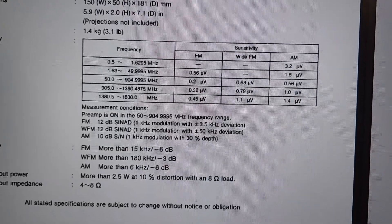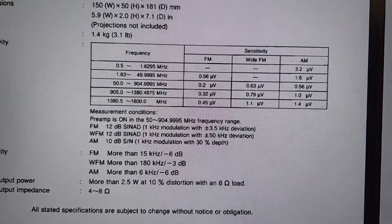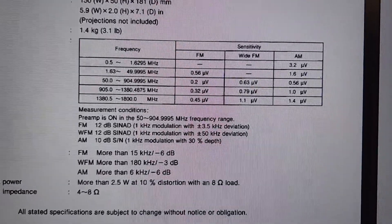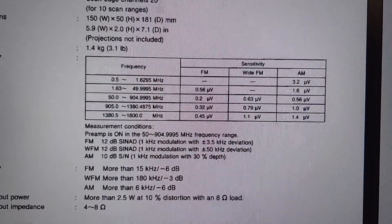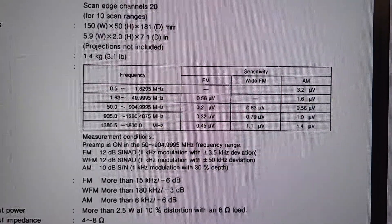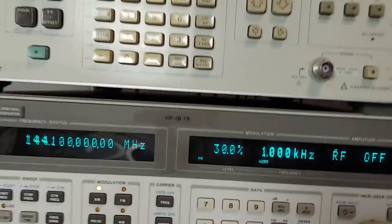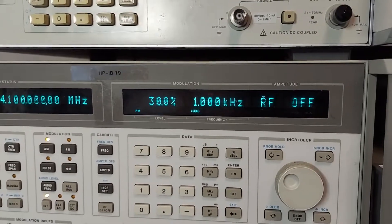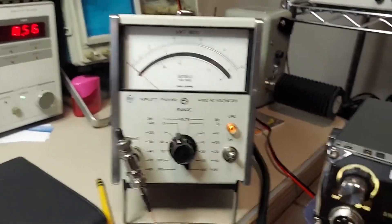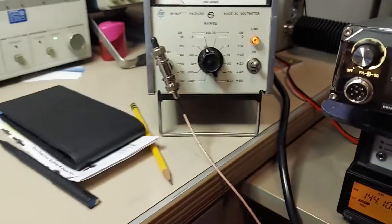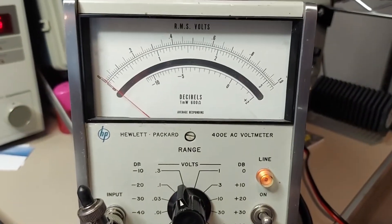Now we're going to move on to the ICOM R100. For AM, a 10 dB signal over noise requires a signal modulated at one kilohertz at 30 percent depth, and we should need a signal level of 0.56 microvolts to meet that. So we have 144.1 megahertz, 30 percent modulation depth at one kilohertz. I'll take the output, the speaker output, and plug it into the meter with a little bit of a load on it. So now we'll adjust the volume and get our minus 10 dB setting.